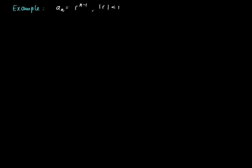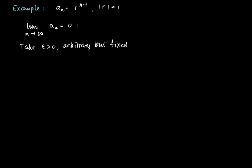Consider the geometric sequence a_n = r^(n-1) where |r| < 1. We will show that the limit of this sequence is 0. Following the recipe: take epsilon > 0, arbitrary but fixed. We try to solve for n such that |a_n - 0| — the distance from a_n to the limit l = 0 — is less than or equal to epsilon.